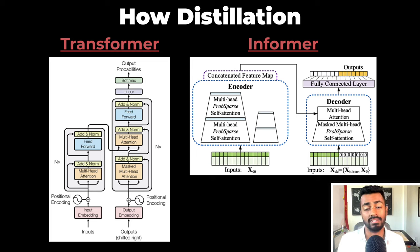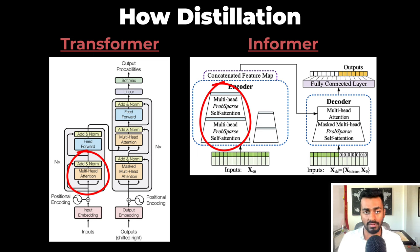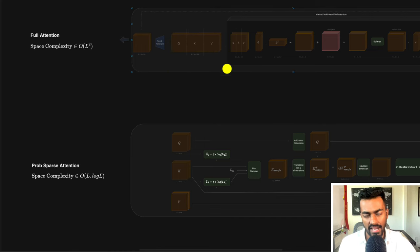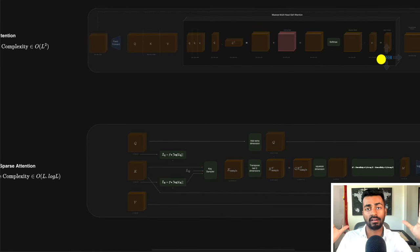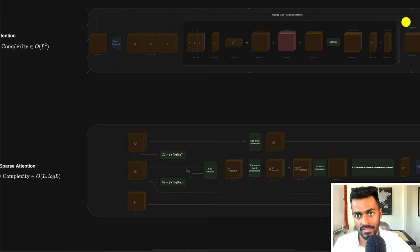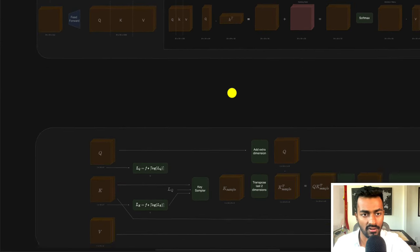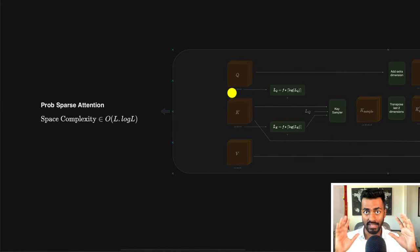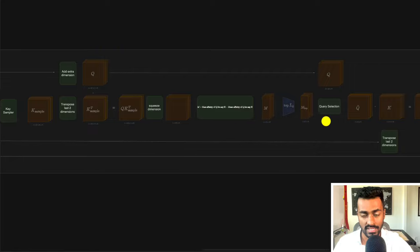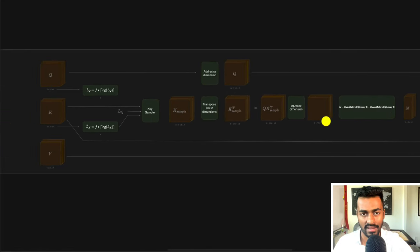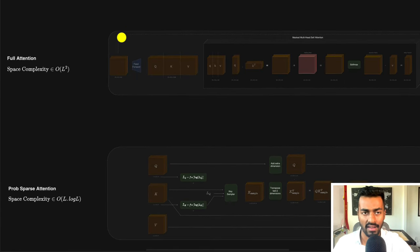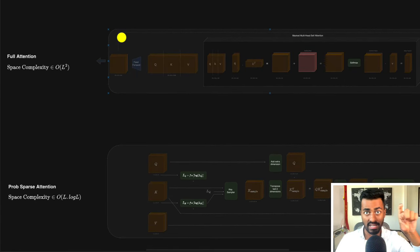Let's now talk about how distillation is performed from an architecture standpoint. Here is the high-level architecture for the transformer and the informer. Let's take a magnifying glass to see the crux of the attention operation for both. This top diagram is the expanded architecture for the transformer attention block — specifically just the masked multi-head self-attention. And this bottom layer is going to be the self-attention operation performed in prob-sparse attention. It's a lot more complicated, but let's identify one similarity and one difference between these two architectures.